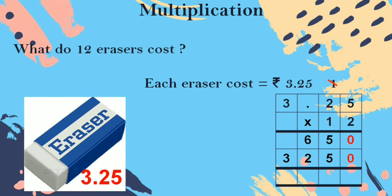You start from the ones place. 0 plus 0 is 0. 5 plus 5 — children, say — yes, 10. You put 0 down, 1 up. Next, move on to the hundreds place number. 1 plus 6 plus 2 — children, what will come? 9. Yes: 1 plus 6 is 7, and 7 plus 2 is 9.